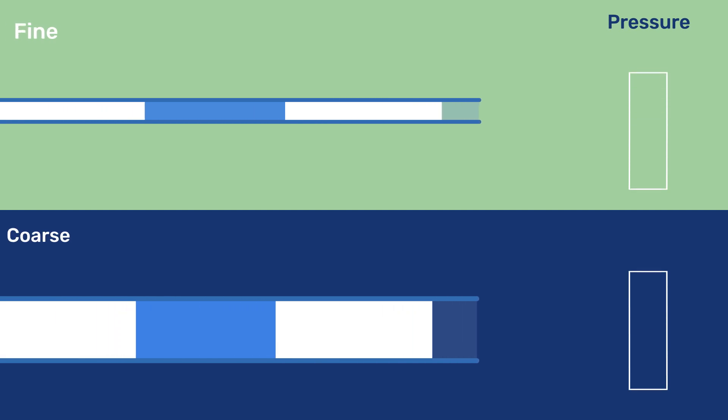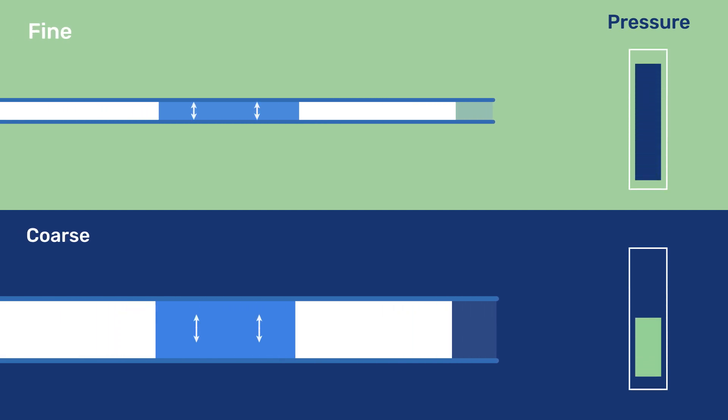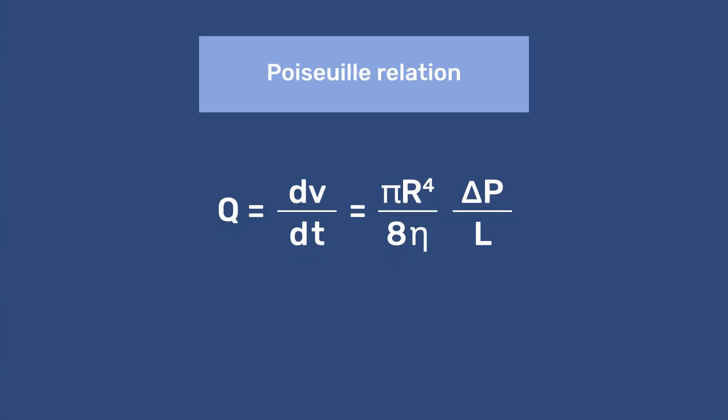This pressure is much higher for fine than coarse materials and explains why coarse materials are more difficult to damage by freezing than fine ones. This can be understood through the Poiseuille equation as explained in our video on hydraulic pressure.